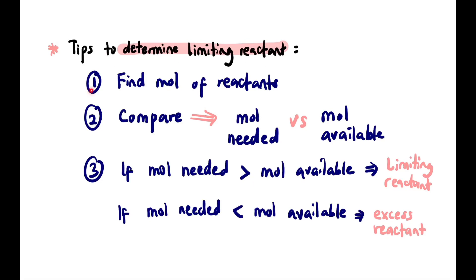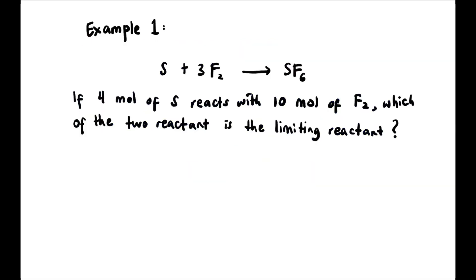Here are some tips to determine the limiting reactant. Step one: find the moles of reactants. Then compare moles needed versus moles available. If moles needed is more than moles available, it is the limiting reactant. If moles needed is less than moles available, it is the excess reactant.